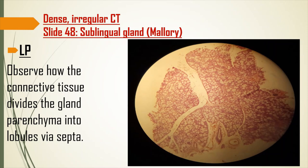At low power in the sublingual gland, the poorly stained whitish areas are mucous acini and the darkly stained areas are serous acini. What separates the lobules is an interlobular duct, and between the lobules is where you find the collagen fibers of the dense irregular connective tissue. Sketch this only at low power.